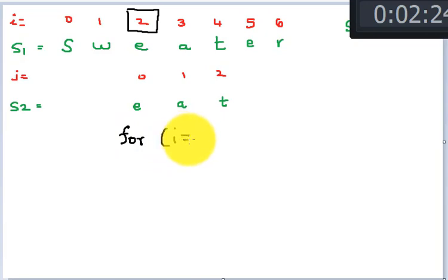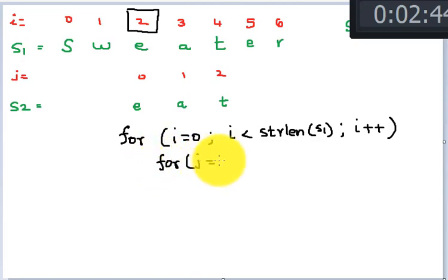i equal to zero, i less than the string length of s1. There's a better way, but let's take a simpler one. And for j equal to zero, j less than string length of s2, j plus plus. So here we're going to check...